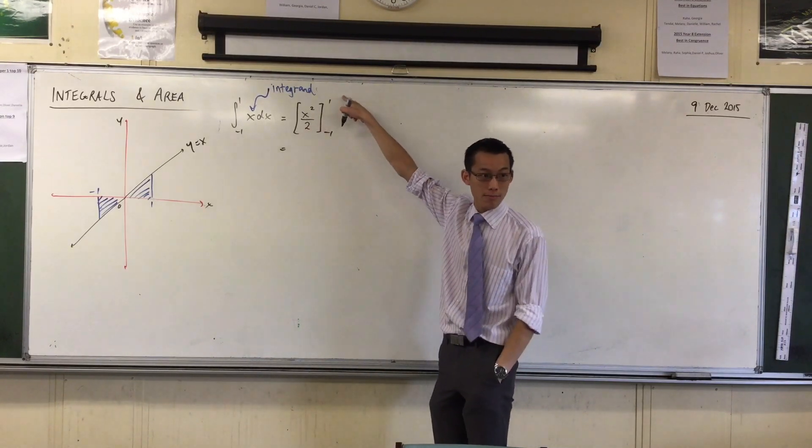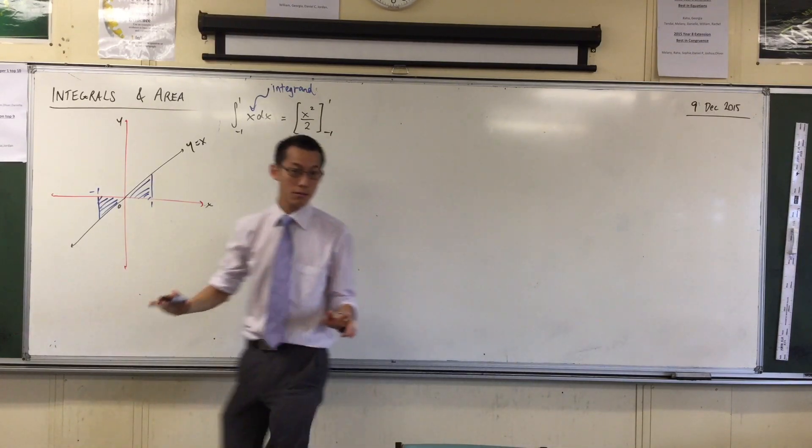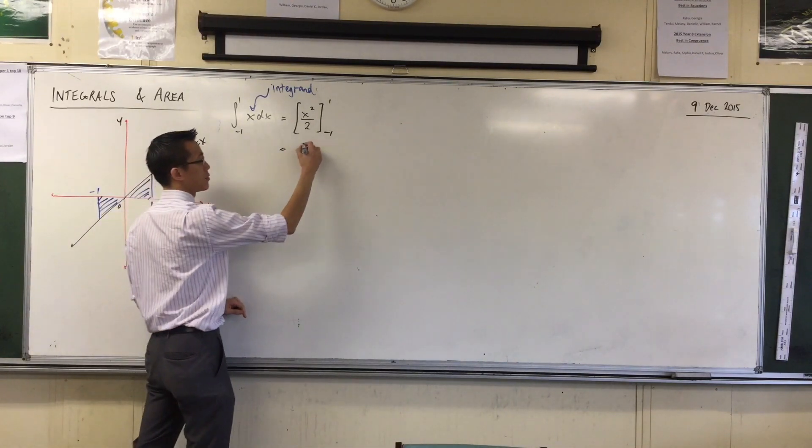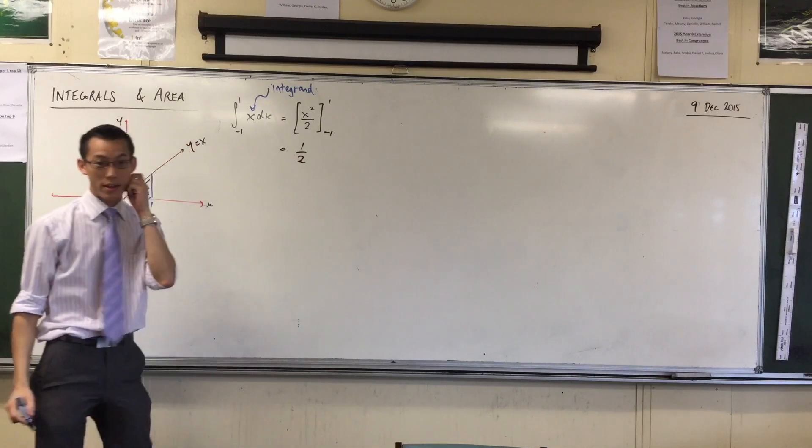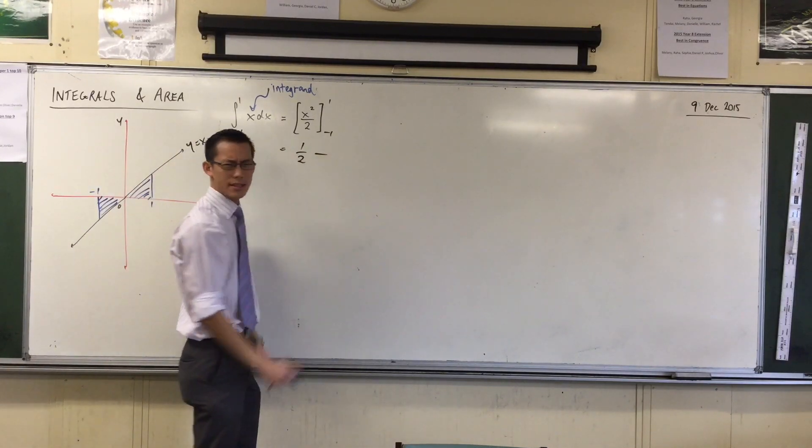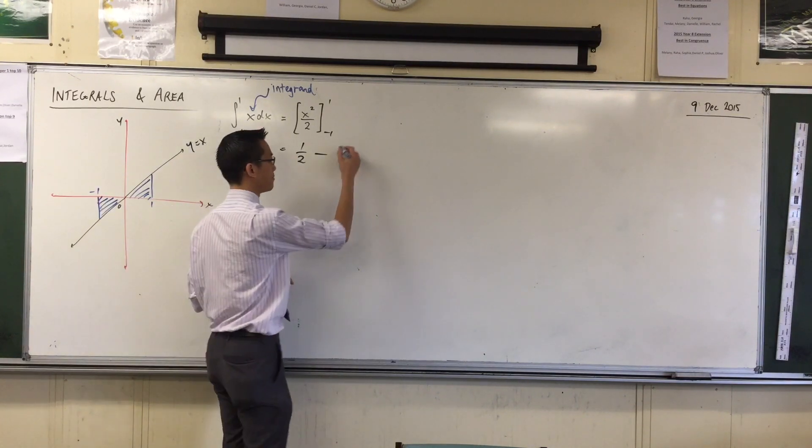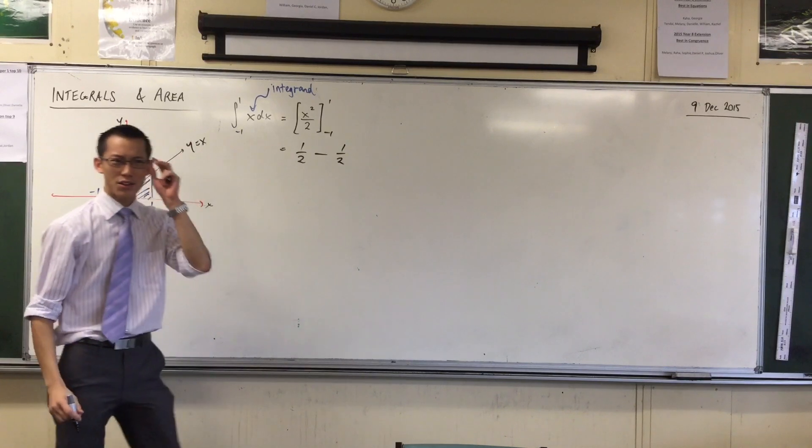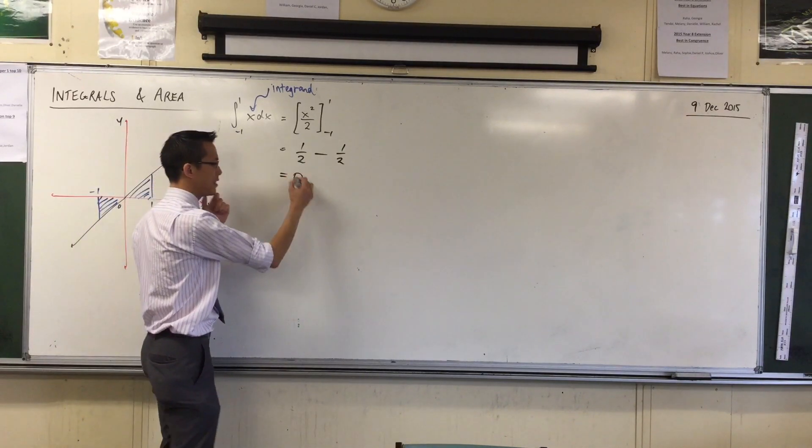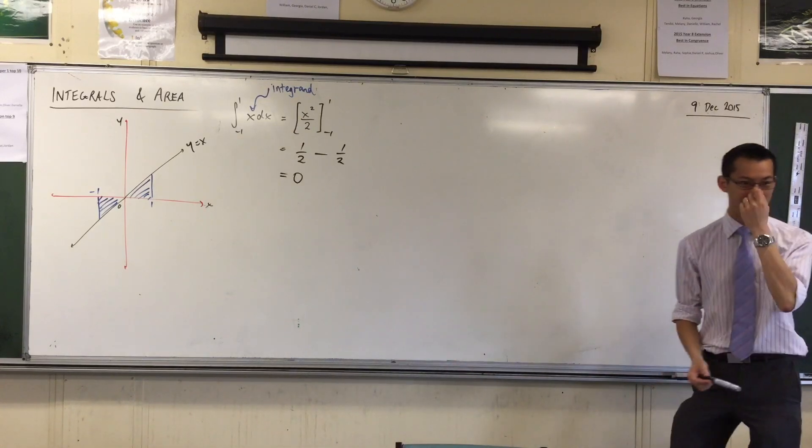This means evaluate it at 1, and then take away what happens when you evaluate it at negative 1. No big deal. So let's write this out. Here's the substitution. 1 squared is just 1, and then I'm taking away, well, what's negative 1 squared? Also 1. So then you come up with this puzzling result that apparently our area is 0. Now, it doesn't look like 0 to me.